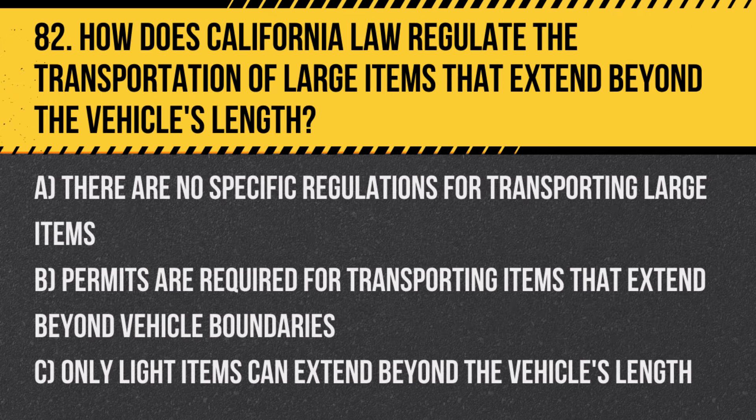Question 82: How does California law regulate the transportation of large items that extend beyond the vehicle's length? A. There are no specific regulations for transporting large items. B. Permits are required for transporting items that extend beyond vehicle boundaries. C. Only light items can extend beyond the vehicle's length. Answer: B. Permits are required for transporting items that extend beyond vehicle boundaries. This ensures safety and compliance with traffic regulations.